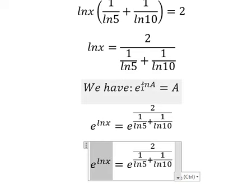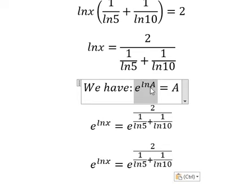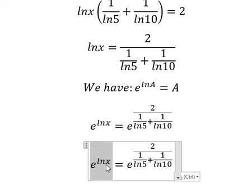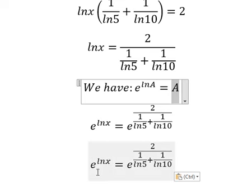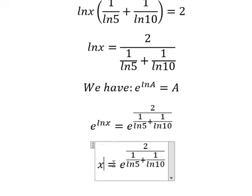Now we need to transform this expression into the final form. e to the power of ln(x) equals e to the power of 2 over the quantity one over ln(5) plus one over ln(10). And that is the final answer. This is the end, thank you for watching.